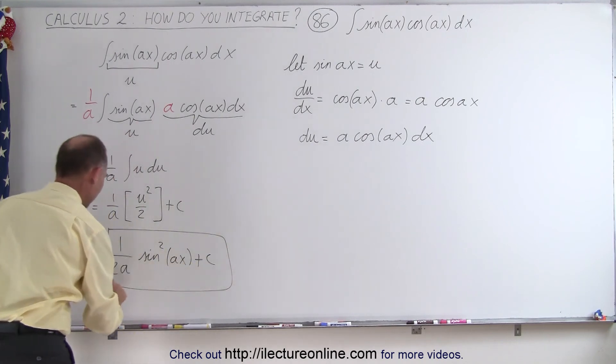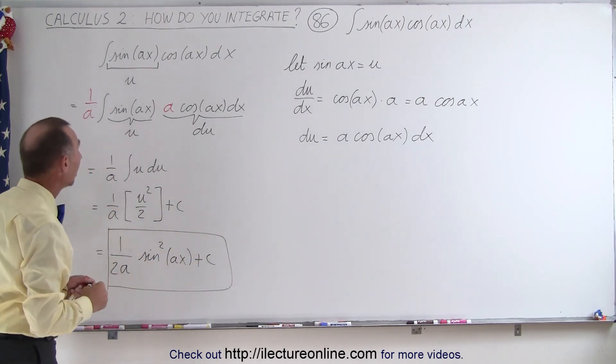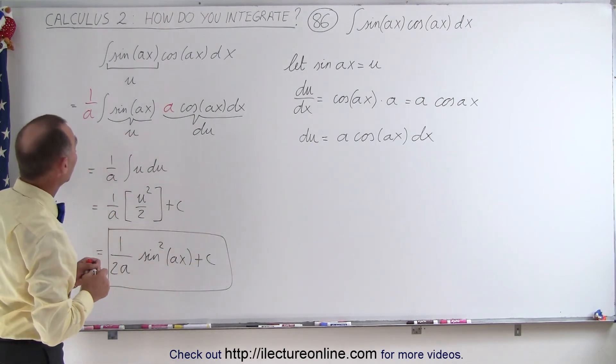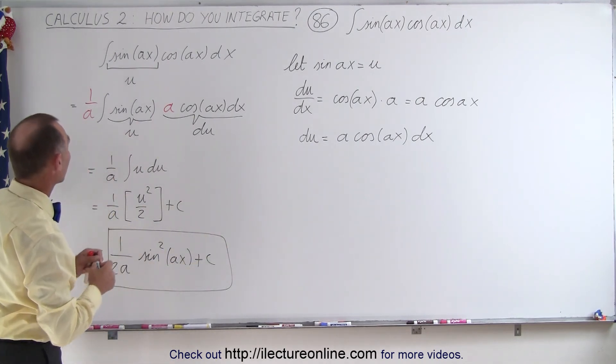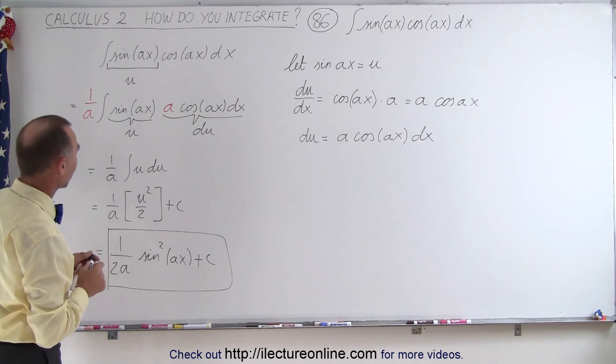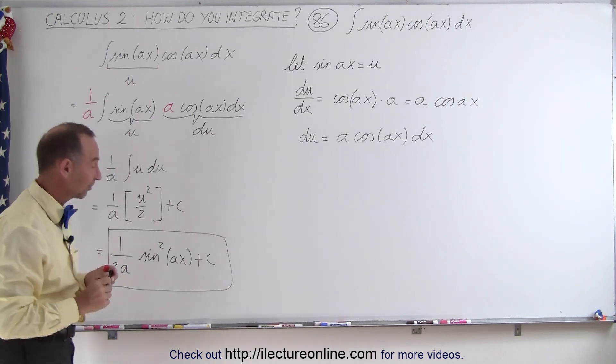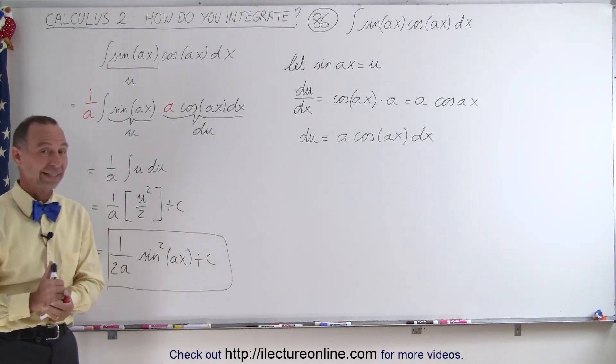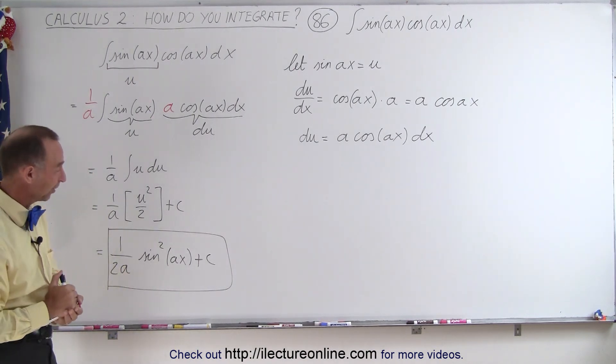And that's then the integral of the sine of Ax times the cosine of Ax, and that's how it's done.